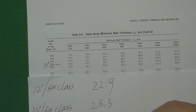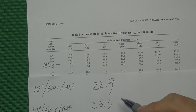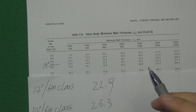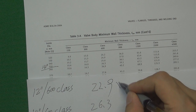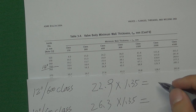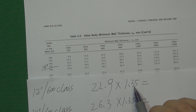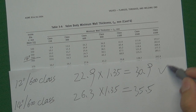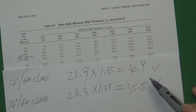Since these values represent the minimum wall thickness, in real manufacturing most engineers add a safety factor to ensure the valve is safe for use in pressurized environments. Most of the time, we multiply by 1.35 as a safety factor and use the result to design the valve. For example, 22.9 mm multiplied by 1.35 equals approximately 30.9 mm, and 26.3 mm multiplied by 1.35 equals approximately 35.5 mm.